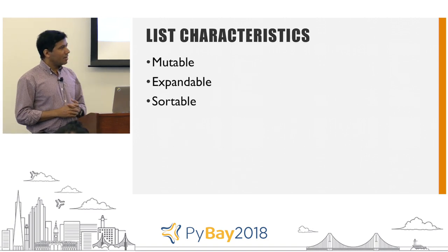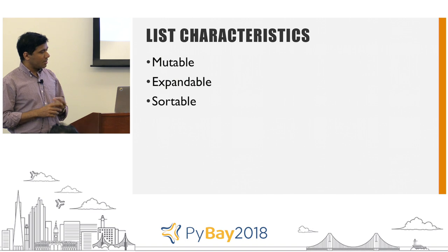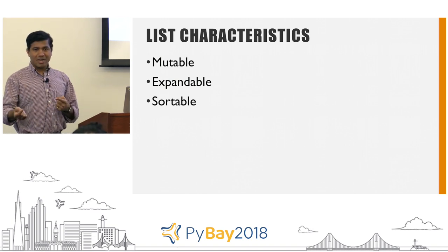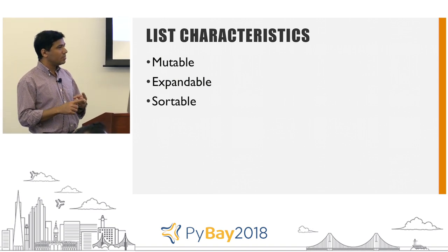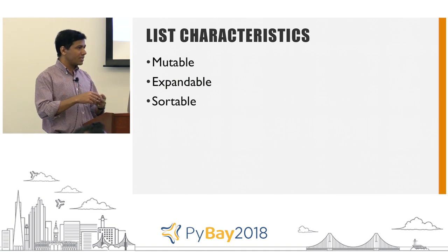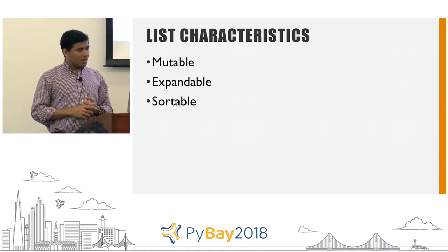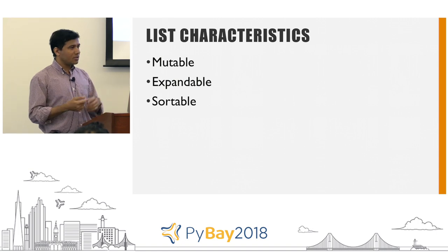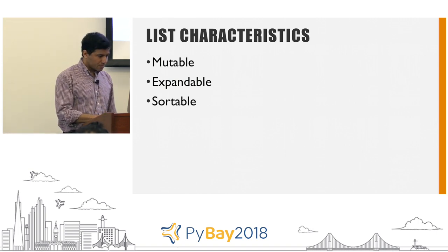The first one is list. Some characteristics: lists are mutable — that means you can add elements and remove elements. You can expand them by adding more elements using append or extend, making it longer and longer. You can also sort them, making them go in ascending or descending order.